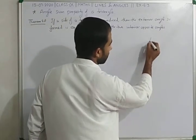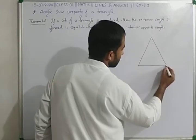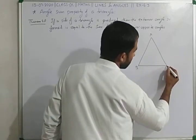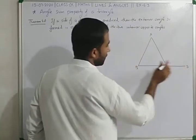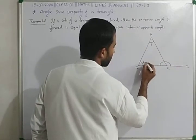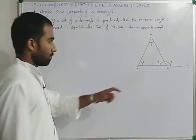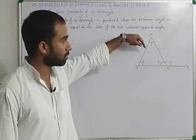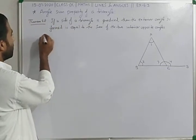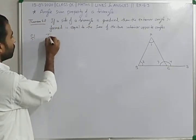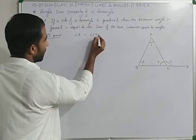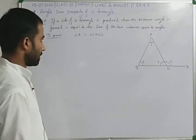Suppose we draw a triangle with vertices A, B, and C, and produce BC in one direction to a point D. We label the angles 1, 2, 3, and 4. Our target is to prove that angle 4 is equal to the sum of the two opposite interior angles, that is, angle 1 plus angle 2. So we write: to prove, angle 4 equals angle 1 plus angle 2.